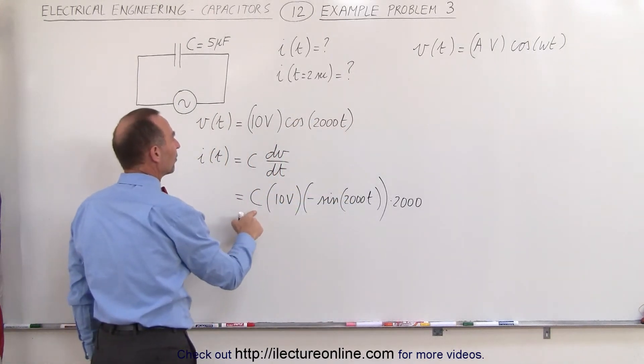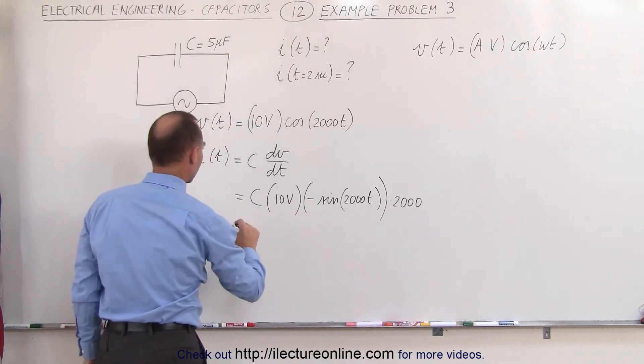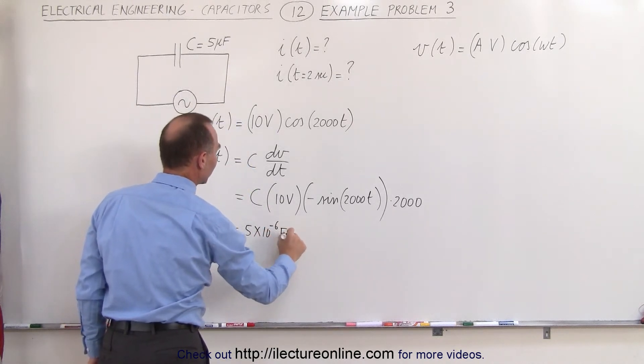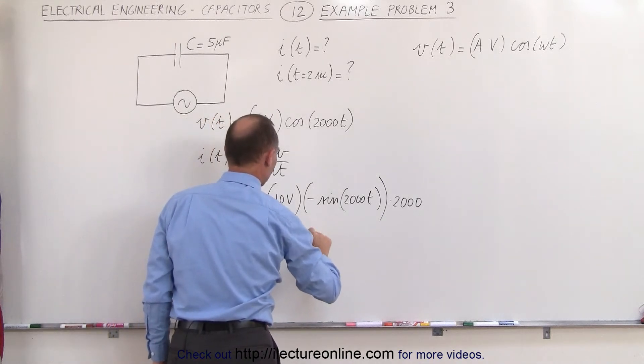Now we need to plug in what C is equal to. In this case, C was 5 microfarads, so this becomes 5 times 10 to the minus 6 farads, multiply that times 10 volts.